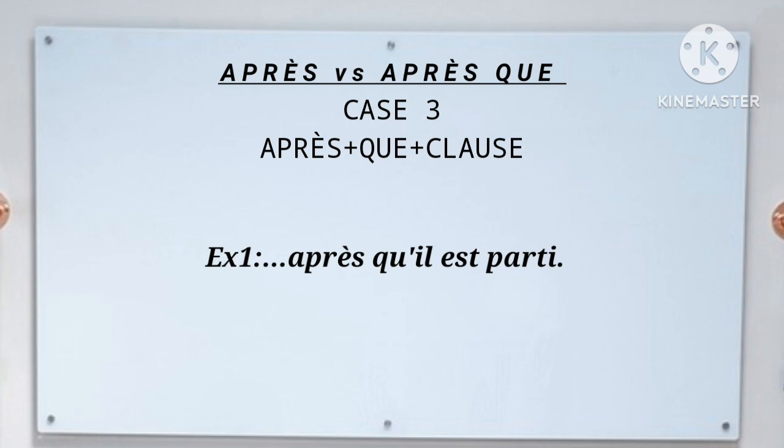We cannot say «après, il est parti» — it's incorrect. That is why que must be introduced: après qu'il est parti. Because après can only be used with a noun or a past infinitive directly following it. In the case of a clause with a conjugated verb, then que must be introduced.